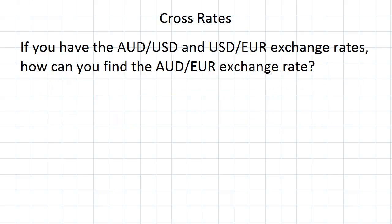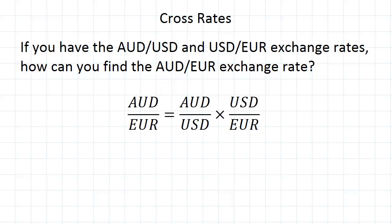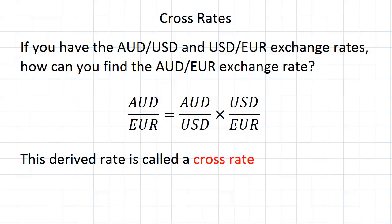So imagine you've got the exchange rate between the Australian dollar and US dollar, and also the exchange rate between the US dollar and the euro. What we want is the exchange rate between the Australian dollar and the euro. We can get this by multiplying the AUD/USD exchange rate with the USD/euro exchange rate, and this rate that we get is what we call a cross rate.